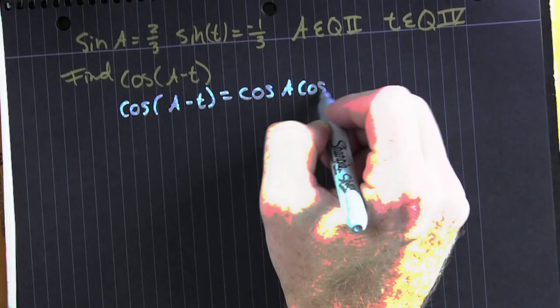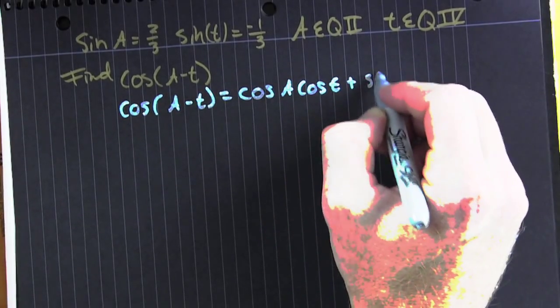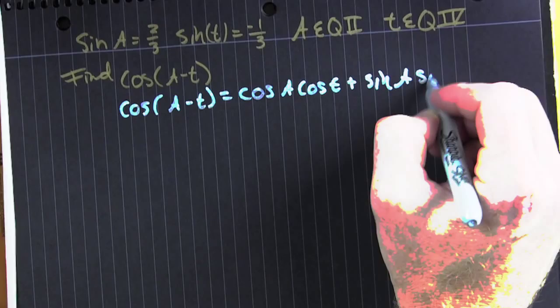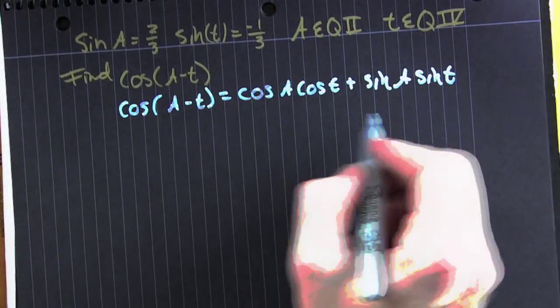So you're expanding that out using the formula. Now they've given you a couple of values. Put those in now.